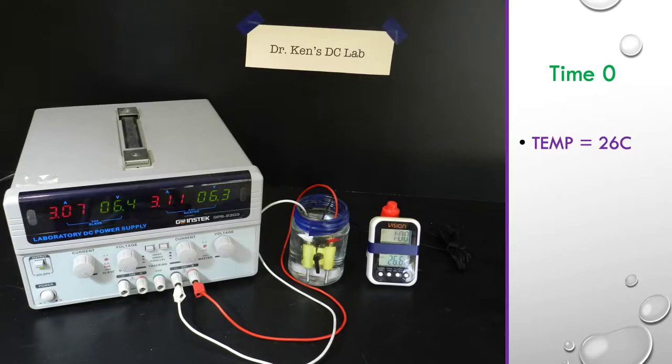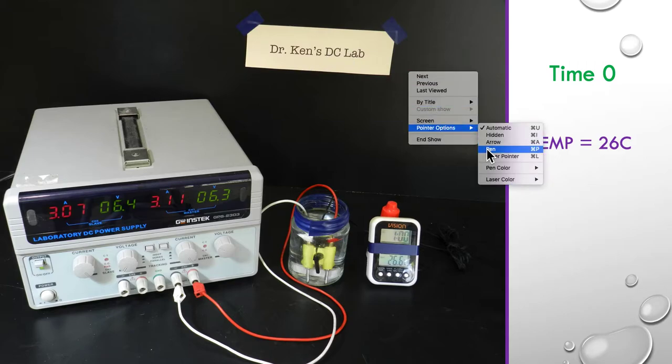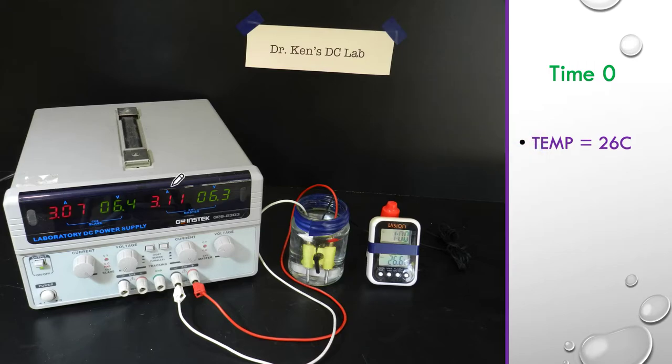So, here's our setup at time zero. I'll just explain the bits and pieces we've got. Here's our power supply. It's a dual tracking power supply, and I've got both sides of it in parallel to give me plenty of current. So, the displays are basically reading exactly the same thing. We've got 3.1 amps and about 6 volts across our heater.